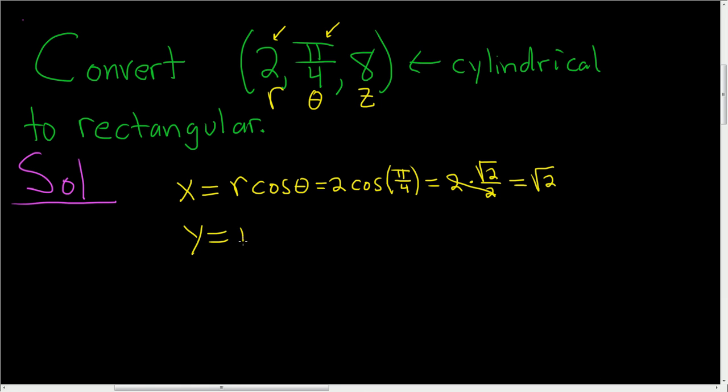The formula for y is r sin θ. As you can see, it's just like polar coordinates when it comes to x and y. r is 2, and θ is π/4. The sine of π/4 is the square root of 2 over 2, so we get exactly the same thing: square root of 2.